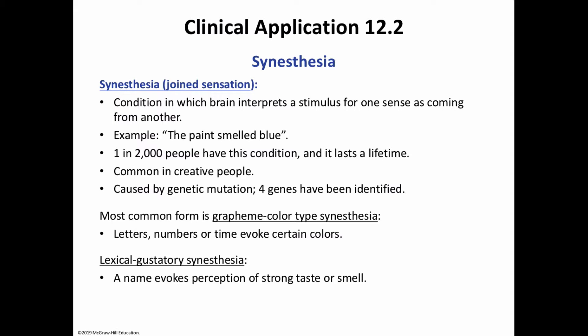We begin with a clinical application on synesthesia — mixed-up senses. A song could be described as full of glittering orange, paint smelling blue, a sunset tasting salty, or purple tasting like a rectangle. One in two thousand people has synesthesia, meaning 'joint sensation,' where the brain interprets a stimulus in one sense as coming from another. It results from a mutation in at least four genes, and is eight times more prevalent in highly creative individuals than the general population.